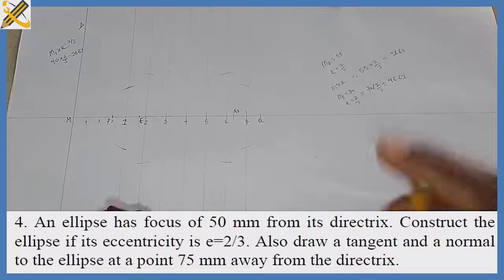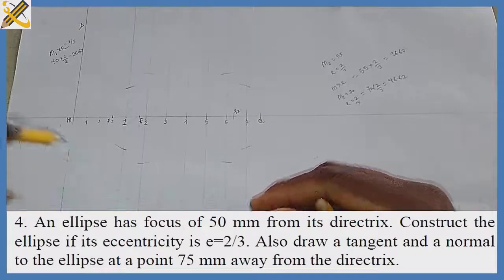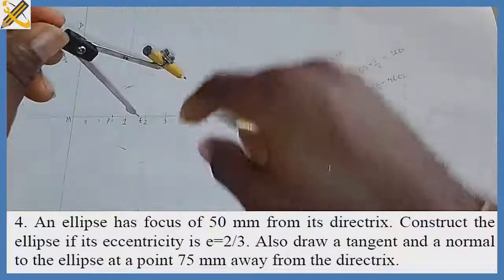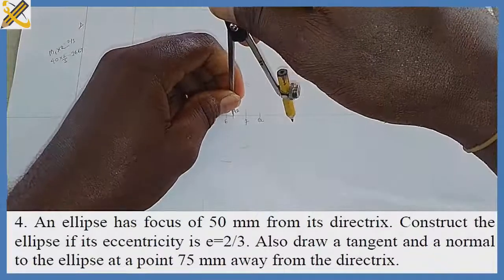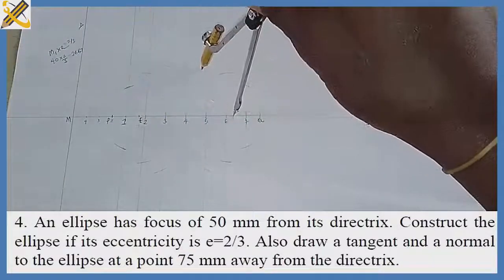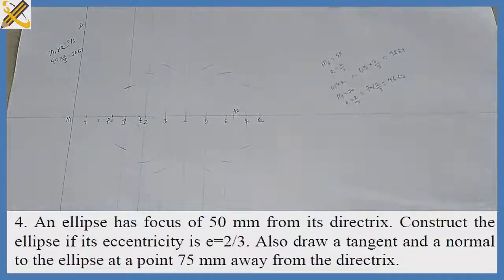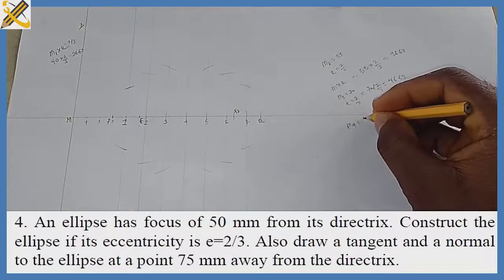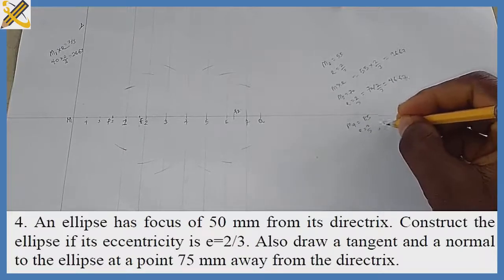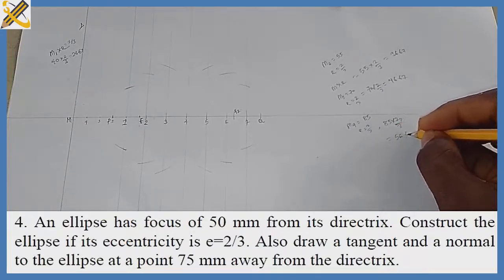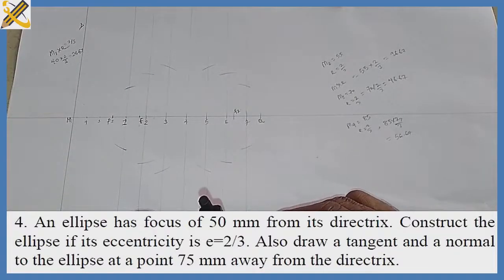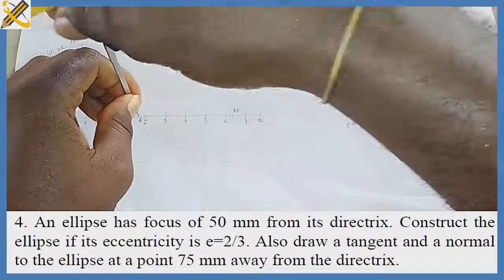With compass measuring 46.67, on F1 I strike an arc on mark 3 top and mark 5 bottom. For M4: distance from M to mark 4 is 85. So 85 times 2/3 = 56.67.